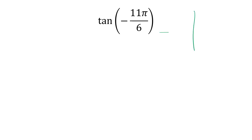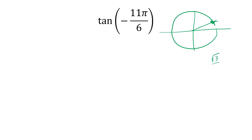Tangent of negative 11π/6. We draw that clockwise, going all the way to a 30-degree reference angle in quadrant 1. The tangent of a 30-degree reference angle is √3/3, and in quadrant 1 it's positive divided by positive, so we get positive √3/3.